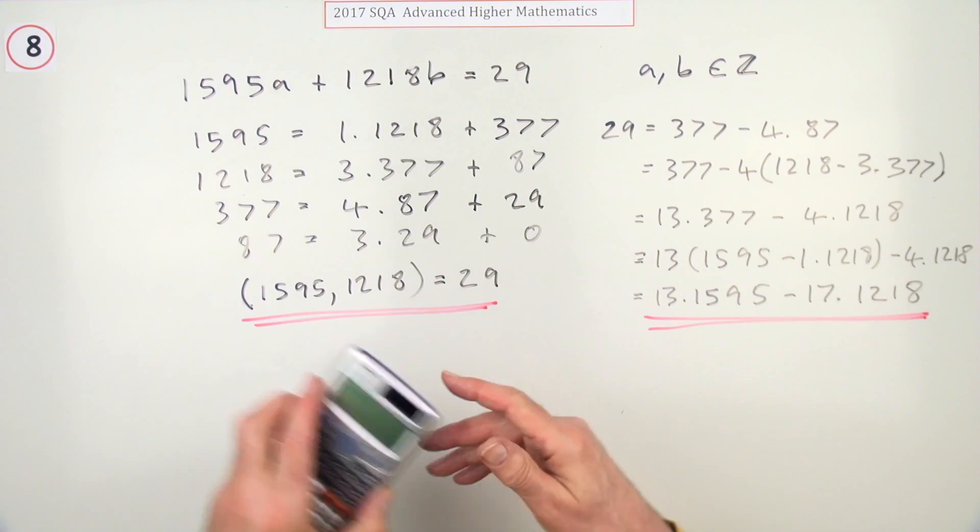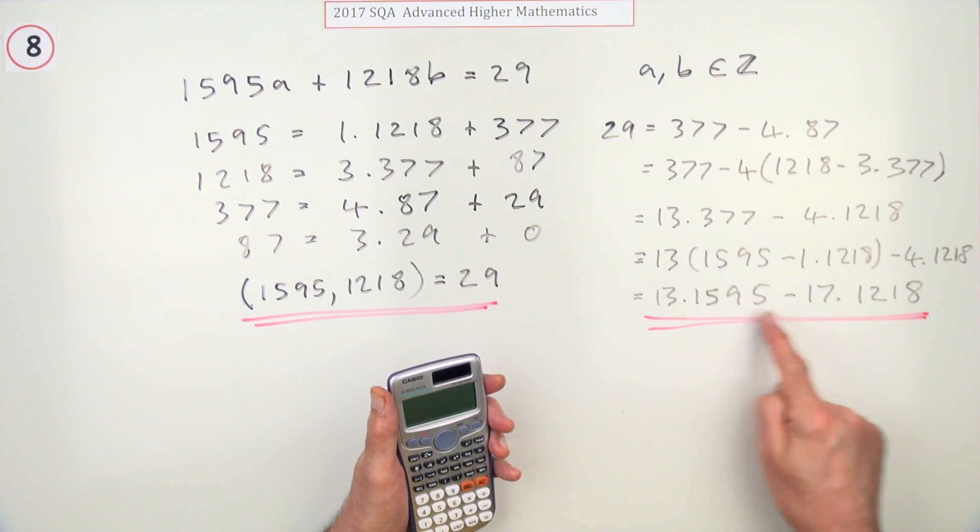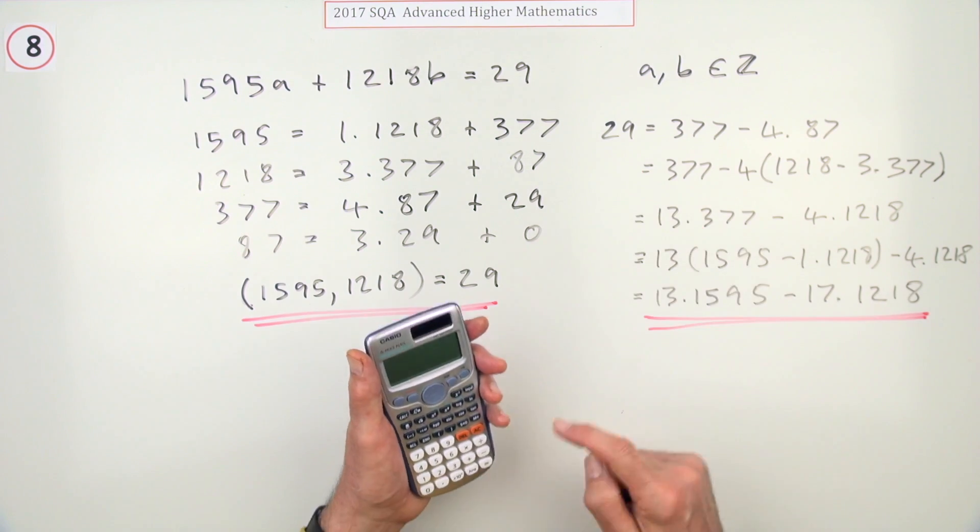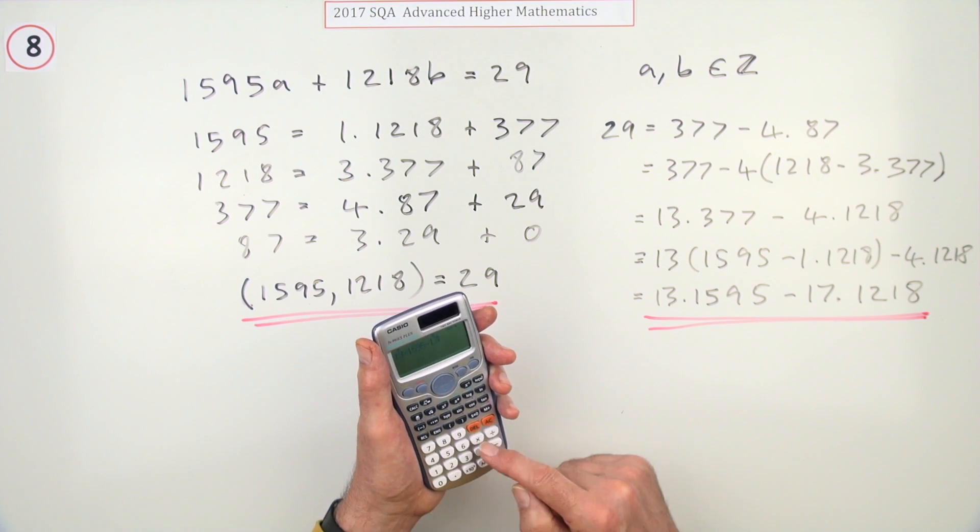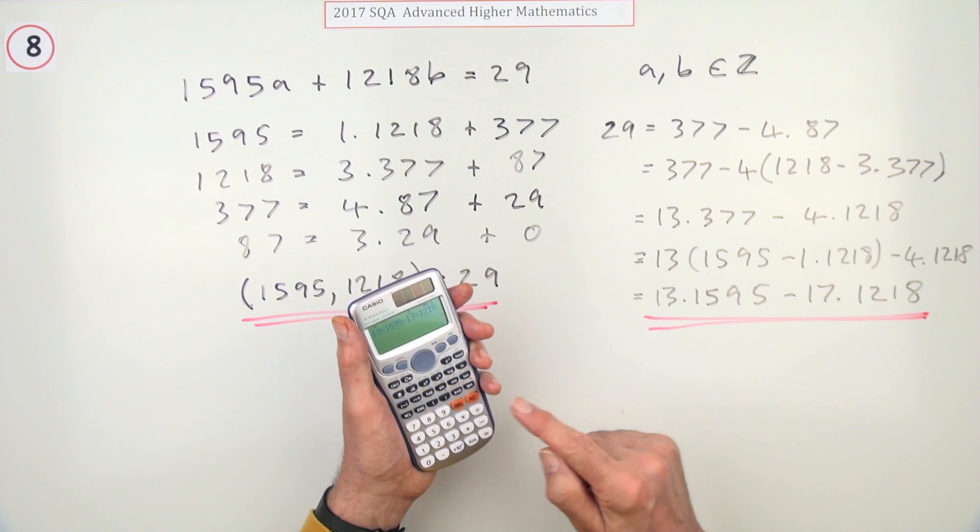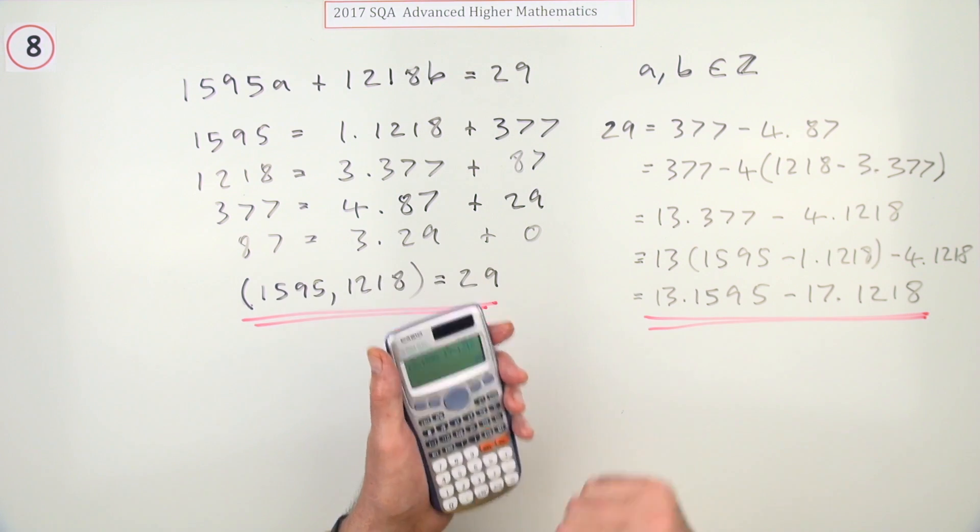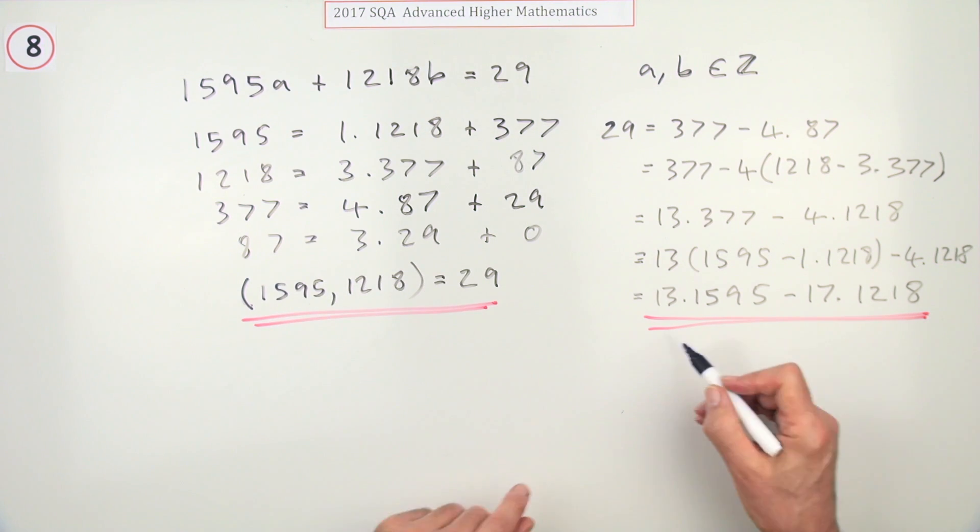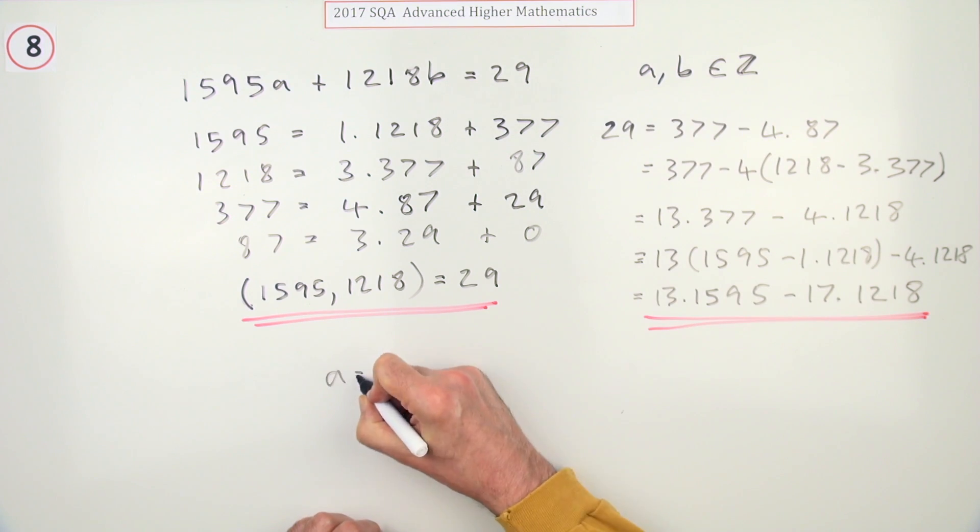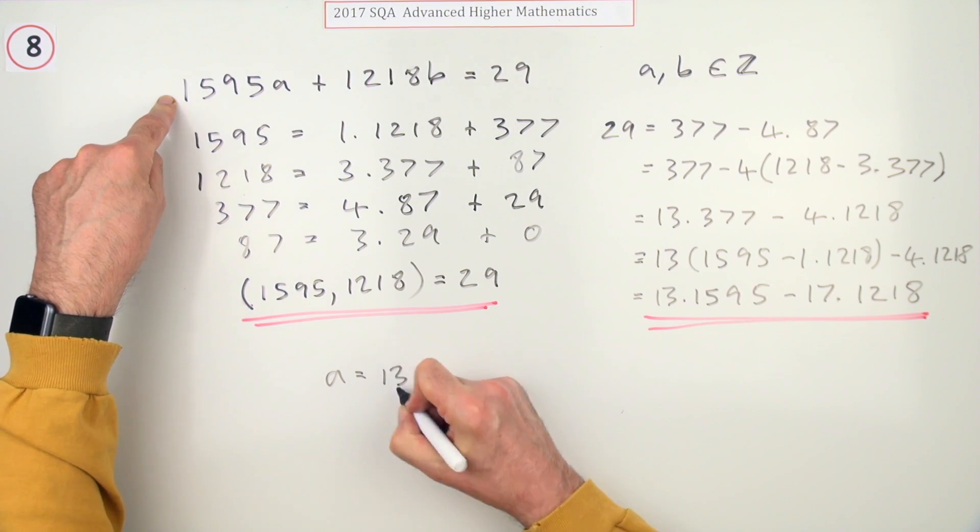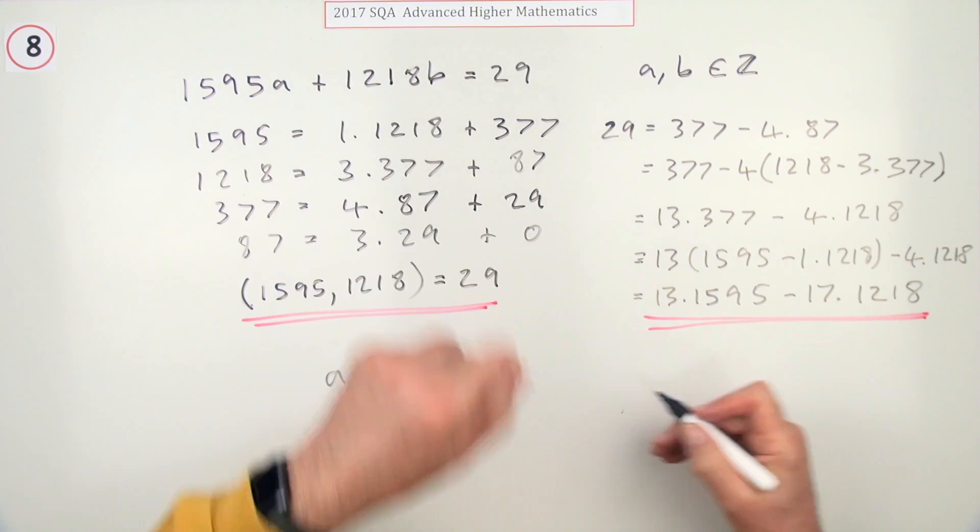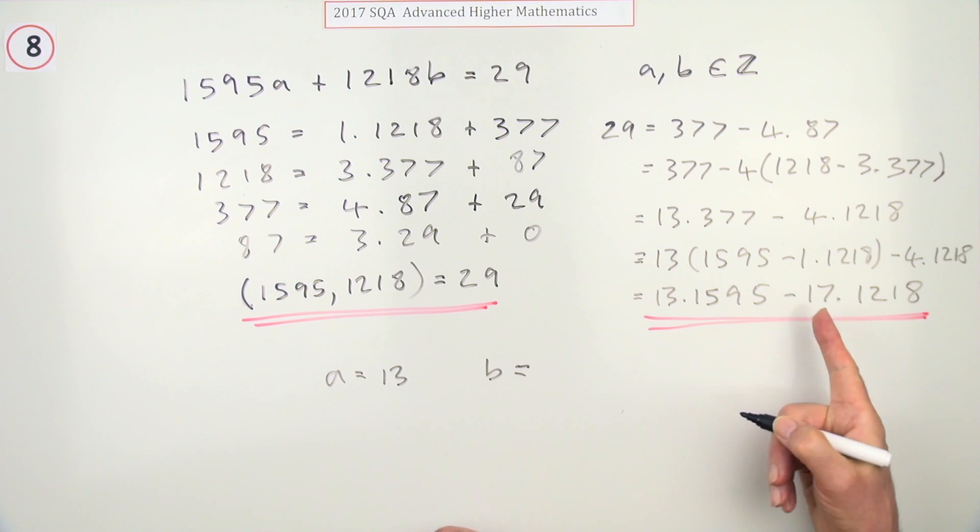And the handy thing about this question is you can check if you've got the right answer. Multiplying this out should give you 29. Critical moment... there it does, 29! Yes, it was right. But the question didn't say just do that - it said what's a and b? So finally, a was the multiple of 1595, that's 13. B was the multiple of 1218, but that was plus, so it must be negative 17.